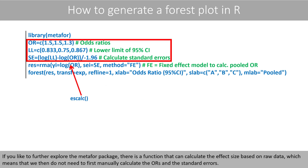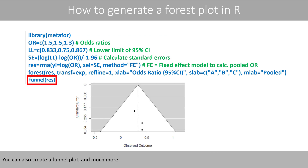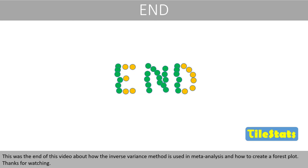If you would like to further explore the metafor package, there is a function that can calculate the effect size based on raw data, meaning you don't need to manually calculate the odds ratios and standard errors first. You can also create a funnel plot and much more. This was the end of this video about how the inverse variance method is used in meta-analysis and how to create a forest plot. Thanks for watching!